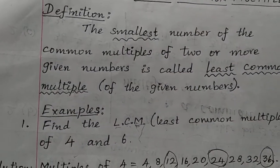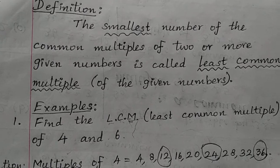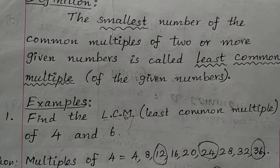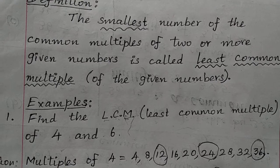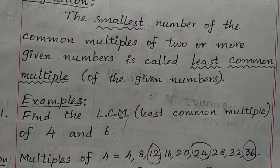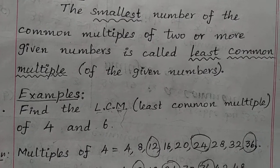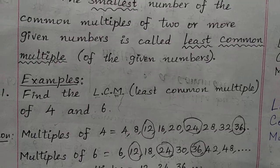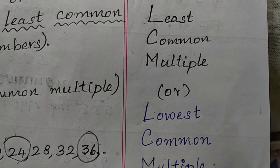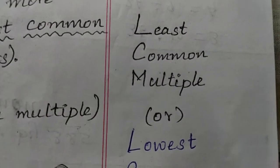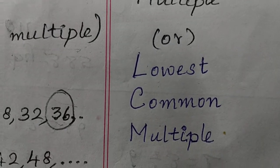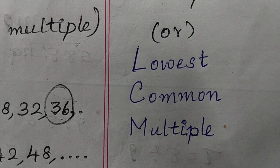Look at the definition again: the smallest number of the common multiples of 2 or more given numbers is called least common multiple of the given numbers. LCM is nothing but least common multiple or lowest common multiple.